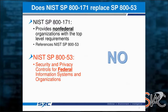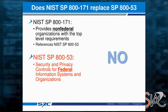Does 171 replace 853? No. Very specifically, 800-171 is written for non-federal organizations — contractor organizations protecting government information. 853 is specifically written for federal information systems. 171 has derived 853 requirements; they are not specific quotes, but those requirements are very much parallel and you'll find yourself referencing 853 because 171 does reference that information.